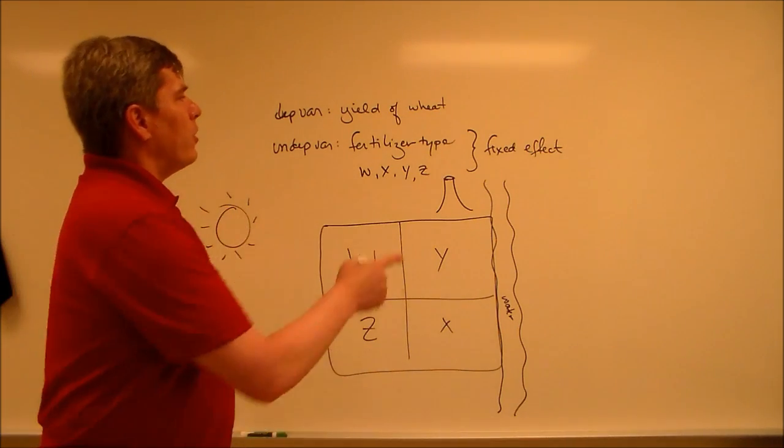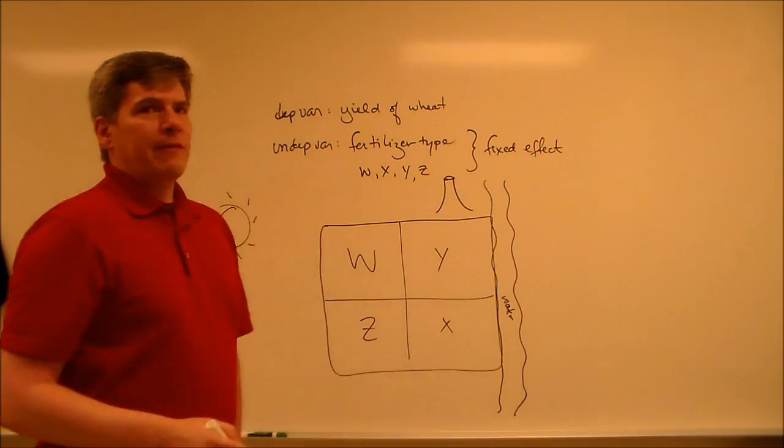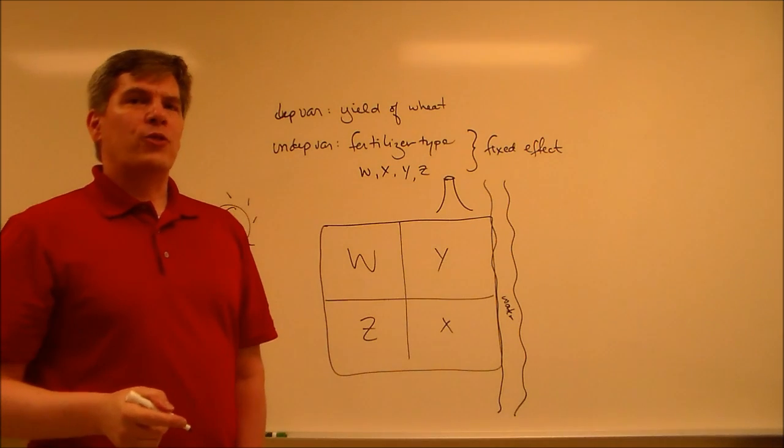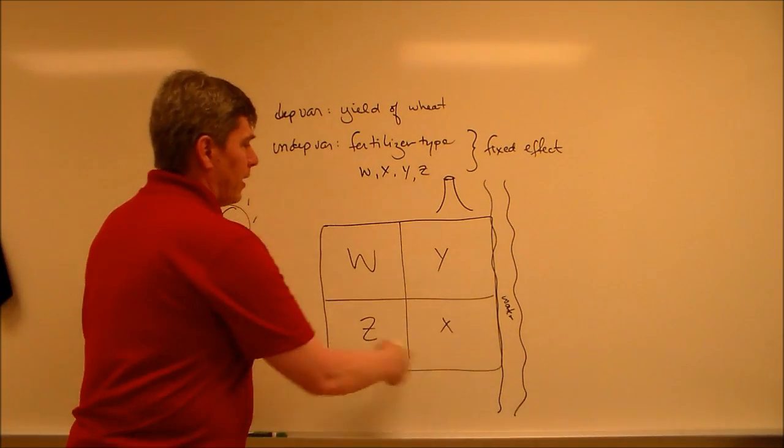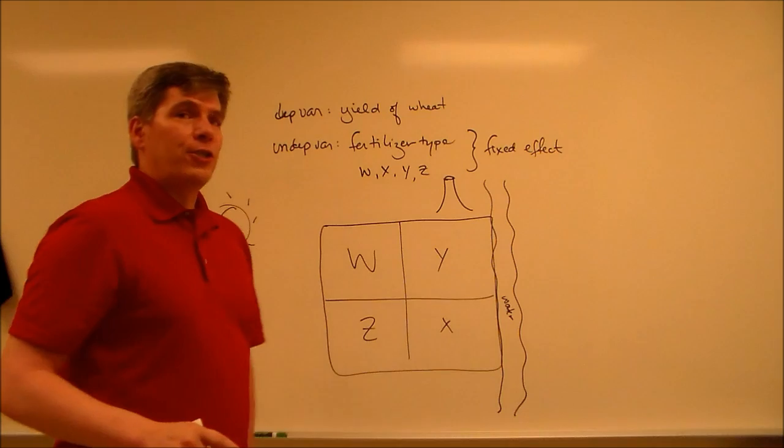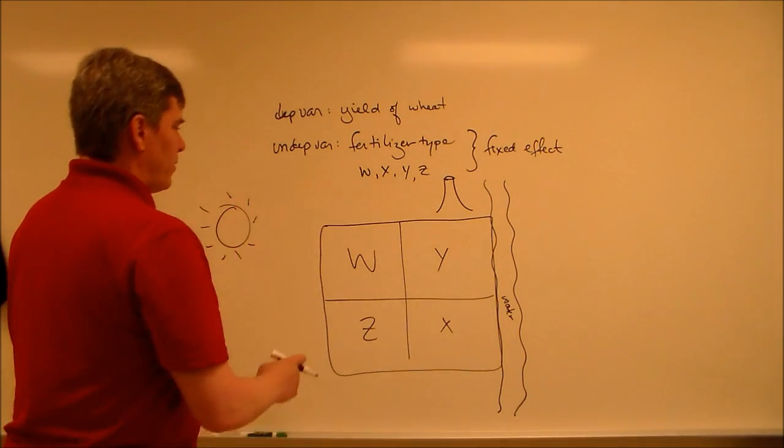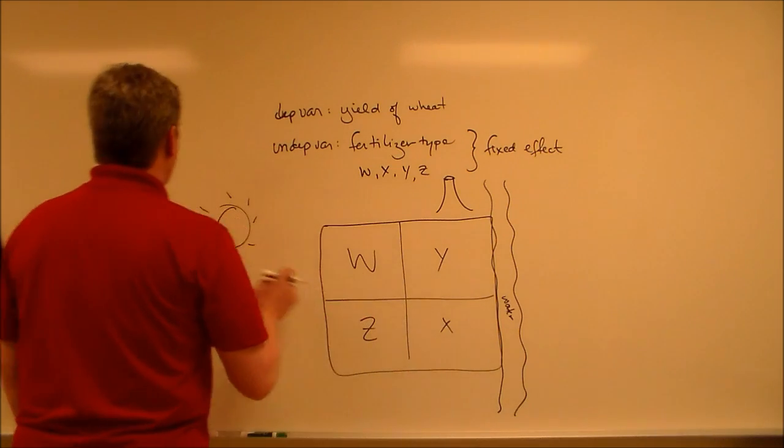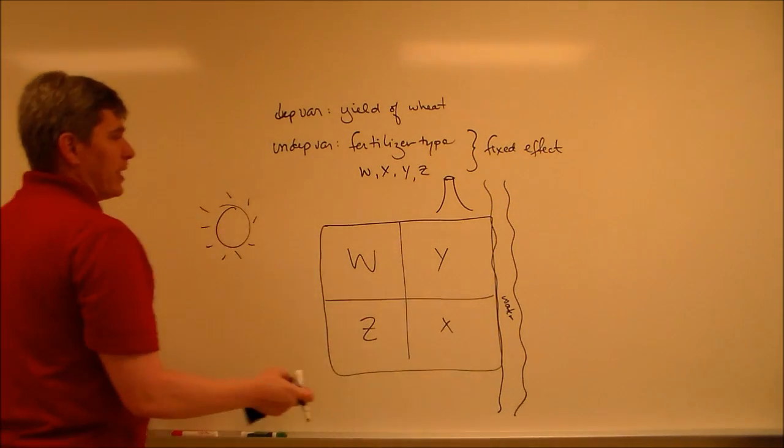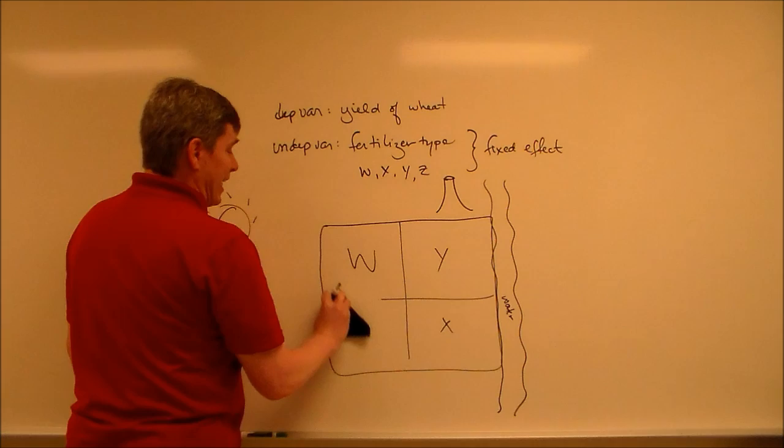Here's how it's done. Notice there's four levels in your fixed effect. So your Latin square design is going to break up this larger chunk of land into 4 times 4, which is 16 different parts. So instead of W, X, Y, and Z in 4 separate parts, we're going to split up that W, X, Y, and Z across 16 parts.